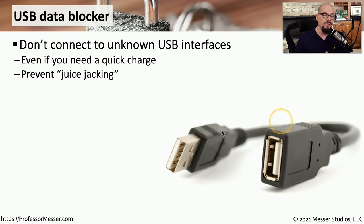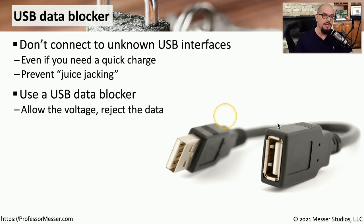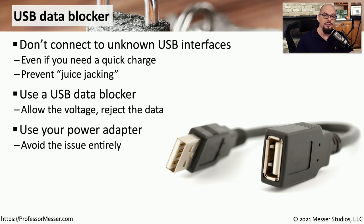In a previous video, we talked about an exploit called juice jacking. This is where you're connecting your mobile device, like a mobile phone, to a USB charging port that is also transferring information over the data lines. If your device is susceptible to juice jacking, you may be unknowingly providing your data to a third party. This is why some people use a USB data blocker, like this small cable, which connects to the USB interface but only connects to the power lines and not the data connections. If you're traveling, it may be worth bringing your own power adapter to avoid this problem entirely.